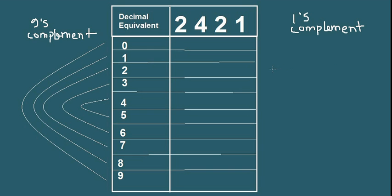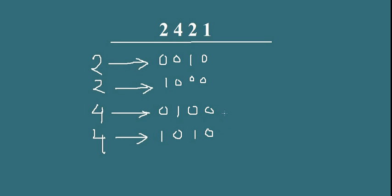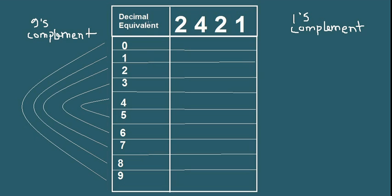Hello and welcome to the tutorial of 2421. For the 2421 weighted code, you might have some questions — for example, what's the correct way to write 2 or 4 or 5? Let's find out. For 2, we could write simply 0010 or 1000. For 4, also 0100 or 1010 — but we can't determine which one should be correct. Let's find out.